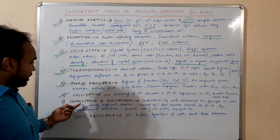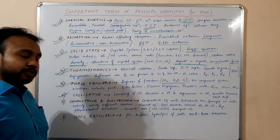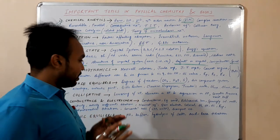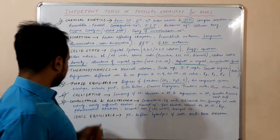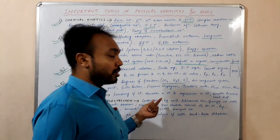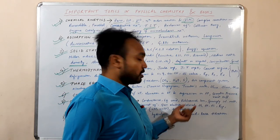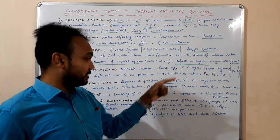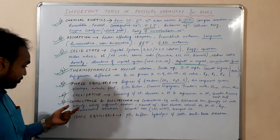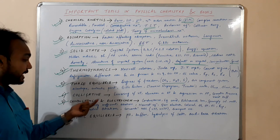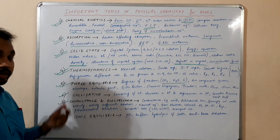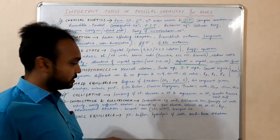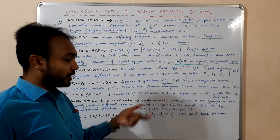Next is conductance and electrochemistry. A specific quantity of questions comes from this chapter. In conductance, you have to study conductance, equivalent conductance, and Kohlrausch's law. Then the equivalent conductivity for sparingly soluble salts like HCl. Then activity and activity coefficient (the gamma value). Then conductivity titration — strong acid versus strong base, weak acid versus strong base, weak acid versus weak base.